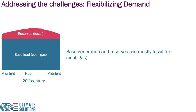Just to recap, when you match supply to demand in the grid, we schedule power at different timescales. The figure here shows that the demand is met by a combination of base generation and reserves. In the traditional grid, which was mostly fossil fuels, these reserves exist because you schedule power according to predictions, and so you have some reserves to match the supply.